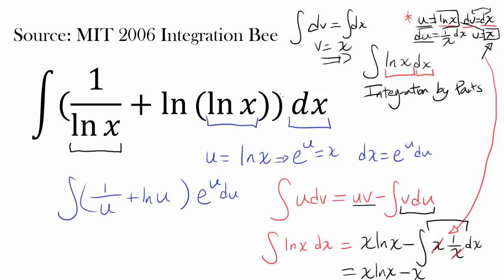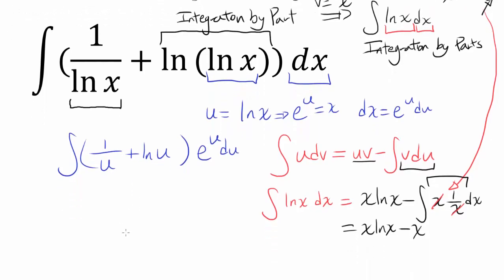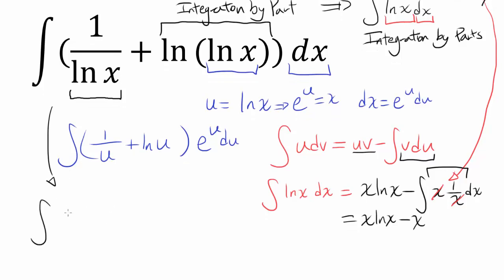So maybe we use a similar tactic for our original integral. For natural log of natural log of x, we can use integration by parts, and maybe something like 1 over x and x will cancel out similarly. Let's start by splitting the original integral, because having 1 over natural log of x dangling next to natural log of natural log of x is cumbersome — so let's break it apart.